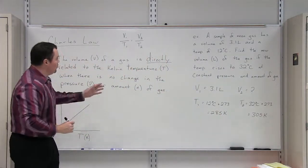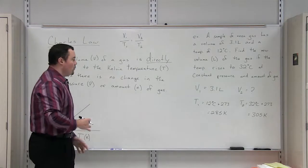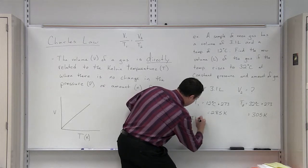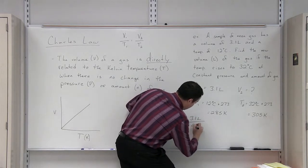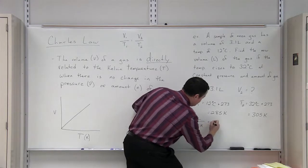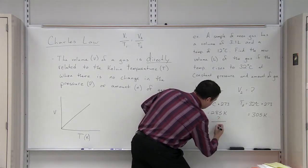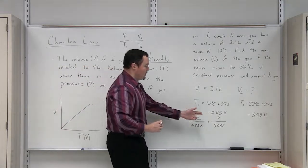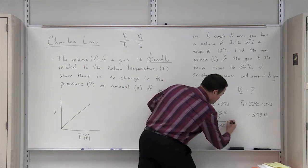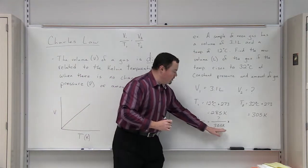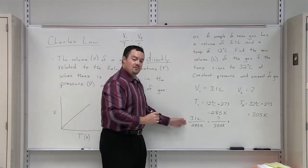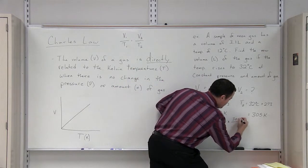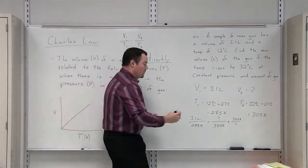In order to solve this problem, we must use the formula for Charles' Law. We input each variable and then solve for the one variable that we need. In order to solve for V2, we need to move this 305 Kelvin to the left side of the equal sign. In order to do that, we multiply by the inverse so that our 305 Kelvin will cancel out.